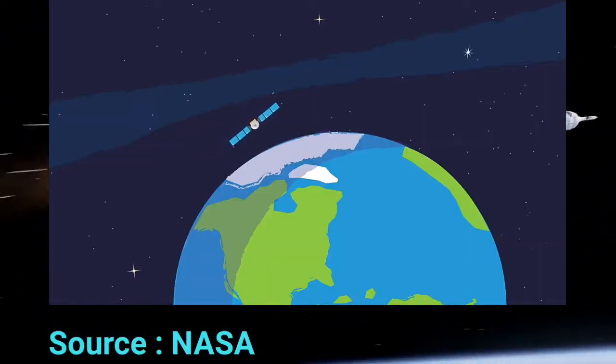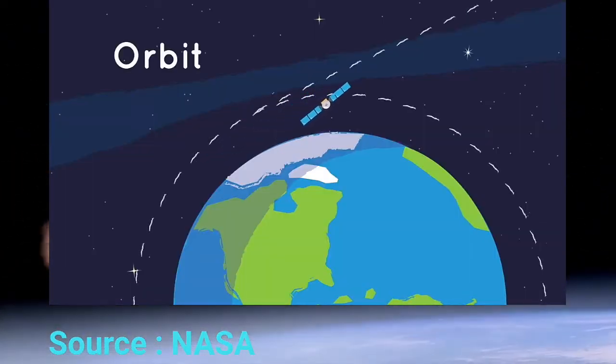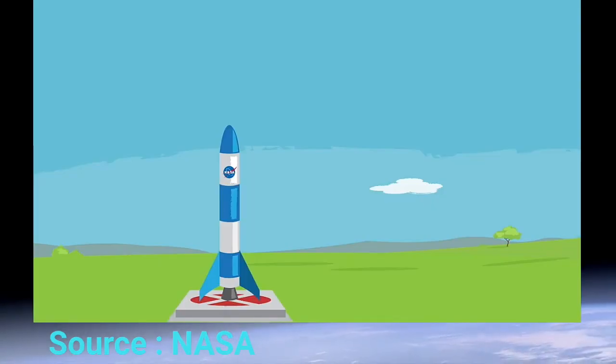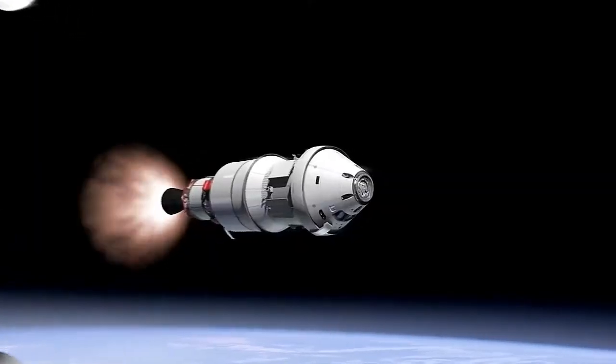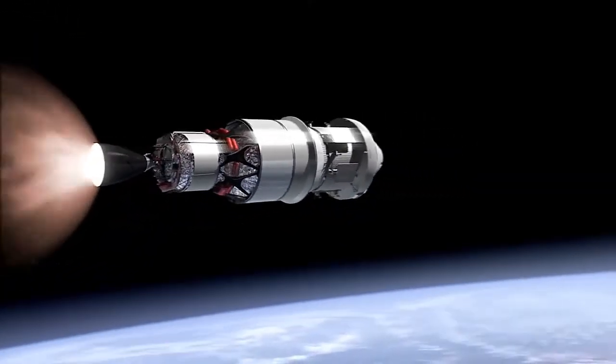A rocket burns a fuel called propellant to push away from Earth and against gravity. This creates a force called thrust. The rocket also contains several booster rockets.